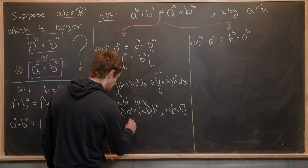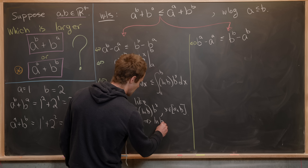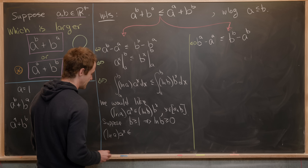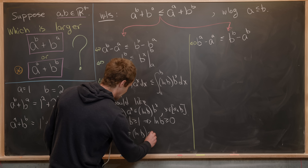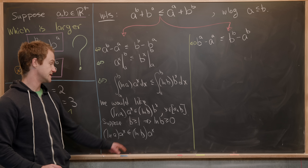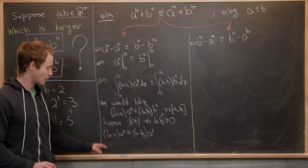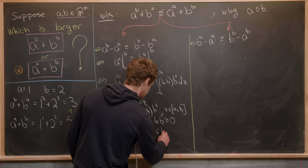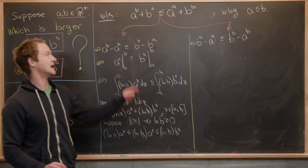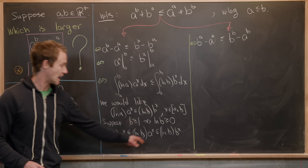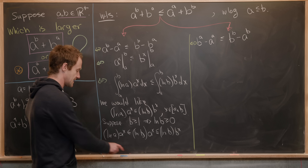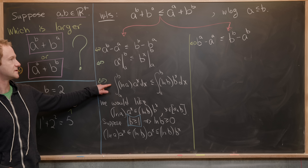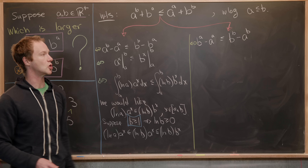Suppose B is greater than or equal to one, which means ln(B) is greater than or equal to zero. Then ln(A) times A to the X is less than or equal to ln(B) times A to the X — because ln(B) is non-negative and ln is an increasing function giving us that ordering. And that is clearly less than or equal to ln(B) times B to the X, since B is bigger than A. So in the case B ≥ 1, the integral inequality holds, which means our goal inequality holds.